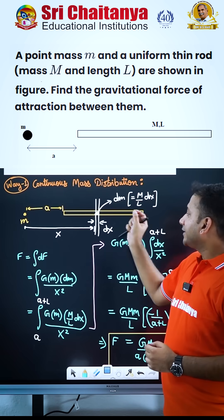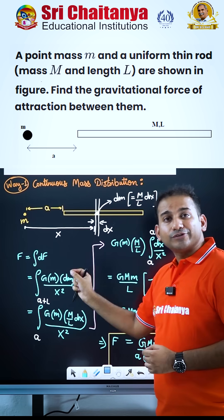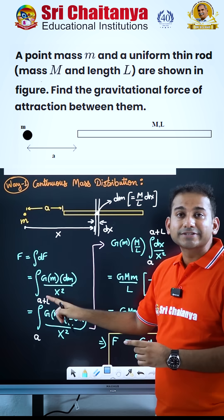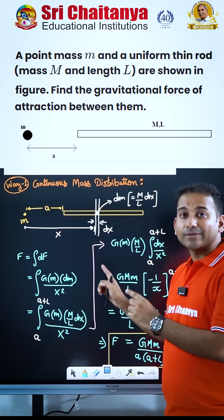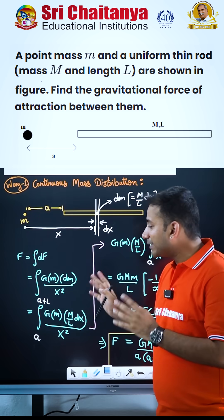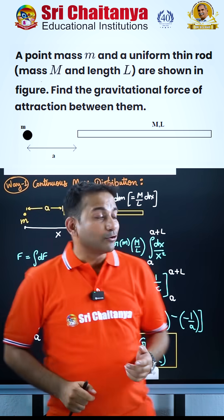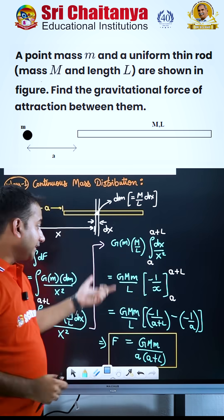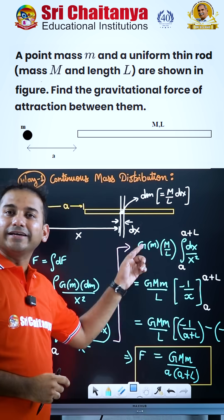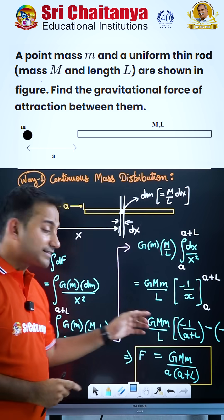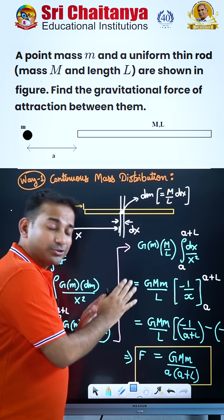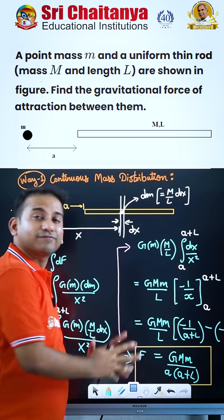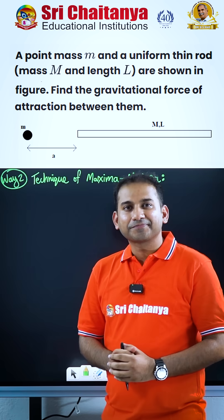After taking the linear element over the rod, we apply Newton's law of gravitation formula, which is applicable for point masses, followed by further integration applying the required limits, and after doing this you will arrive at the final answer.